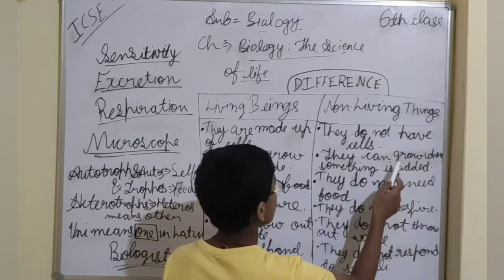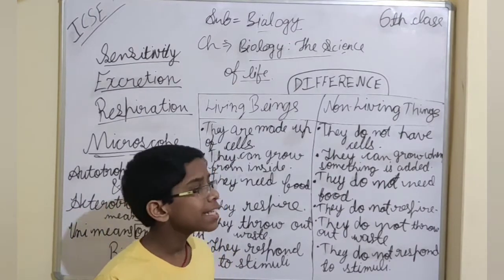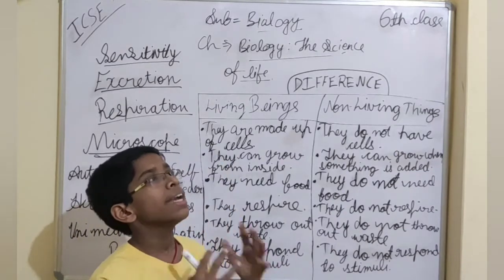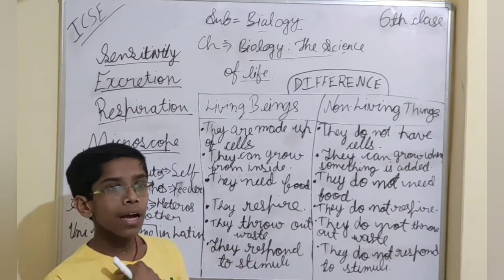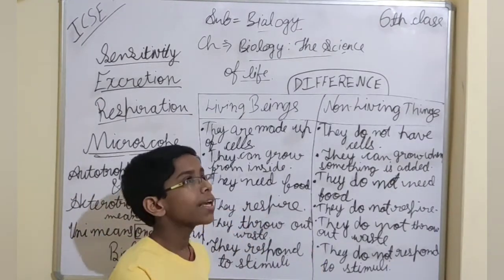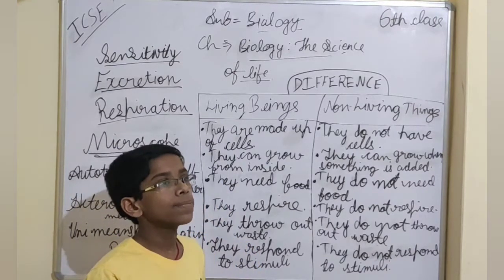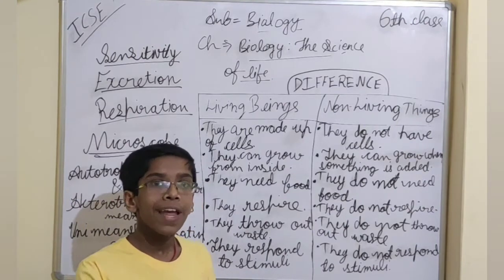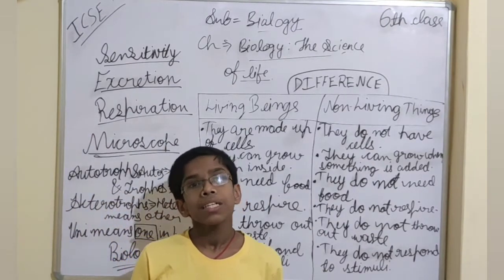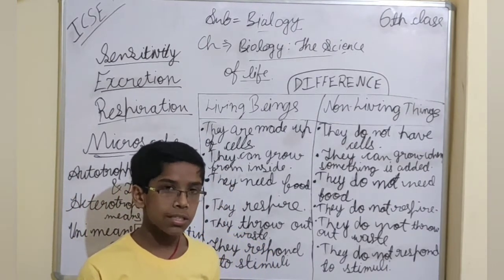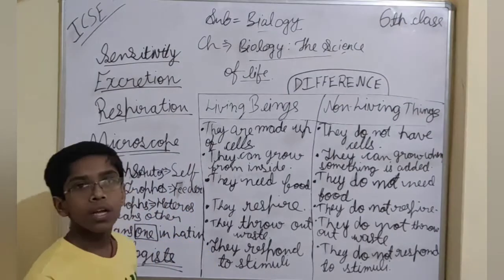Non-living things can grow only when something is added from outside. For example, take a balloon — when we blow air into it, it grows into a big balloon because we are adding air from outside. Another example is a sugar solution: when we add more and more sugar crystals into it, the level grows. This is how non-living things grow by external addition.